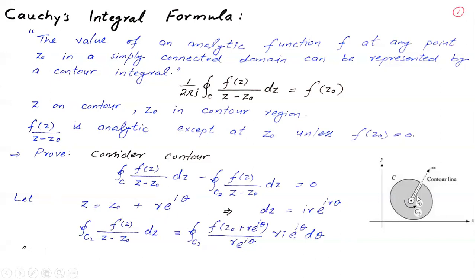I can express any point on the circle as z0 plus r*e^(iθ). Since z0 is constant, dz equals i*r*e^(iθ) dθ. So I will evaluate the contour integral with this parametrization.